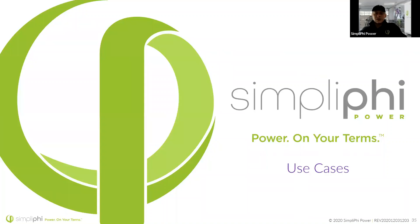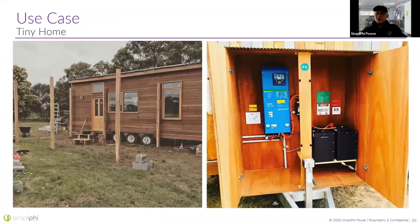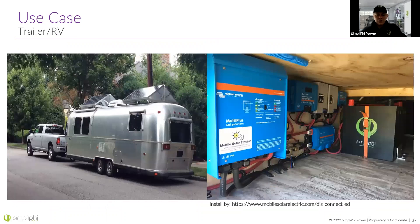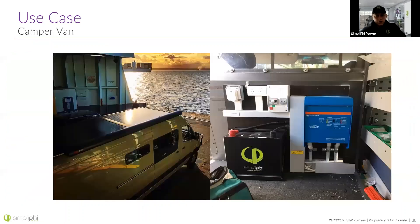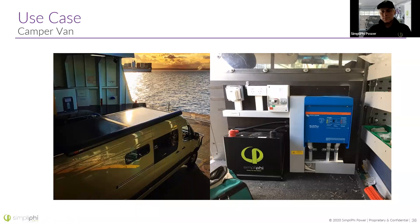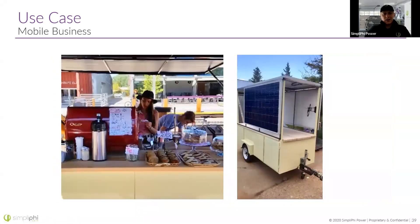Let's look at some cool use case examples. We see people using our batteries in tiny homes, RVs — this is a really good installation by Northern Arizona Wind and Sun's sister company, Mobile Solar Electric, who will do installations and are great — camper vans, and even mobile businesses. We get a ton of inquiries for food trucks every day — it seems like we get more and more.